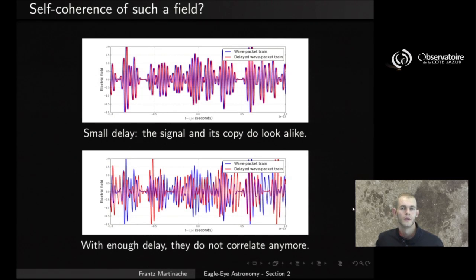With such a field, a more complex electric field, you may guess that you're going to experience some very different self-coherent properties. And remember, we've defined self-coherence as the way two fields are going to look alike. If you delay one, if you're talking about self-coherence, you're looking at the field, making a copy of it, and delaying it in time a little bit, and looking at how look-alike they are.